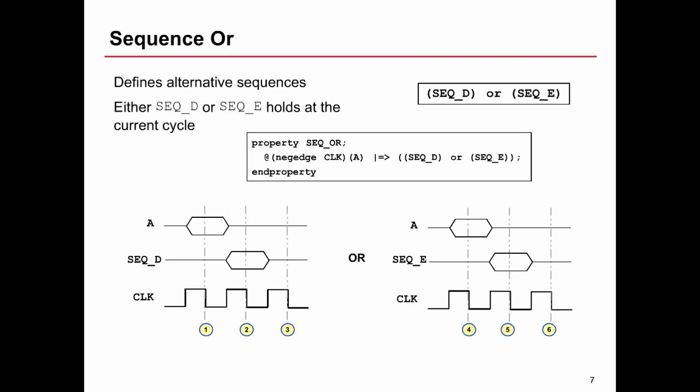Sequence OR allows an alternative sequence to hold. The property says if A occurs, this implies from the next cycle we either have sequence D begin and finish, or we have sequence E start and finish. Either one or the other — or both — will satisfy that property. If on the cycle after A we don't have sequence D start and we don't have sequence E start, that would be a failure of the property.